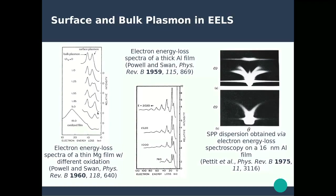Surface plasmons and bulk plasmons were first observed in EELS in the original works by Powell and Swan in 1959 and 1960. In their EELS measurements, they observed two peaks in the spectrum: one corresponding to the bulk plasmon at higher energy and one to the surface plasmon at lower energy. These correspond to the dispersion relations we just saw — if you cut the diagram in half symmetrically, those different modes show up in EELS as well.